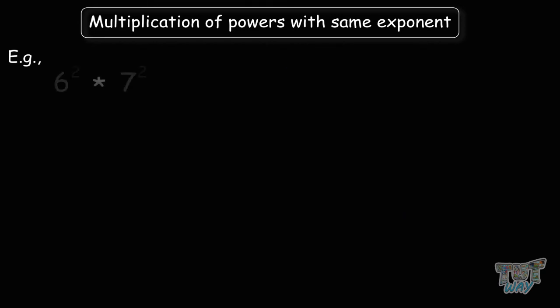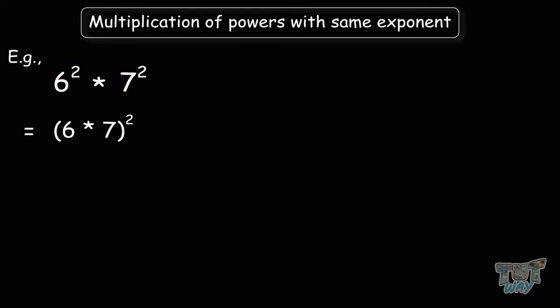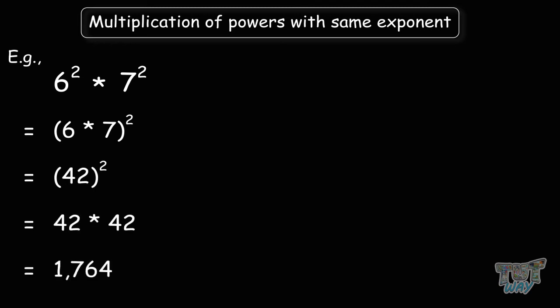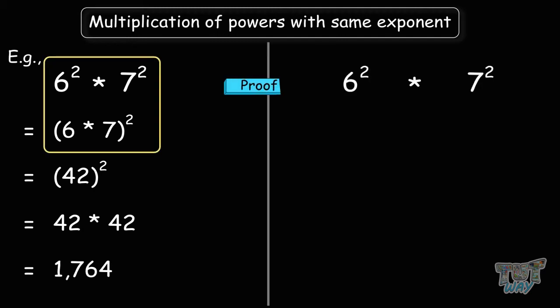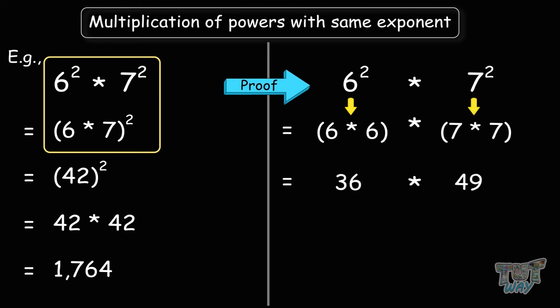Next: 6 squared times 7 squared. We have different bases but the same exponents. According to the law of exponents, we multiply the bases while the exponent stays the same: 6 times 7 to the power of 2, which is 42 to the power of 2. Let's check: 42 times 42 is 1764. Without the law: 36 times 49 also equals 1764 — exactly the same. The law is proved.